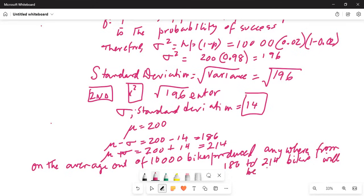That is my tip. That is the interpretation of the standard deviation. It's an average deviation of the number from the mean. Anywhere from 200 minus 14 is 186, and 200 plus 14 is 214.